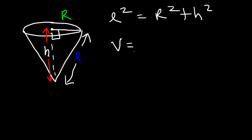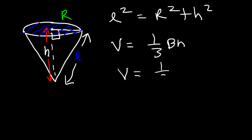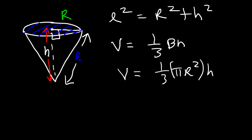To find the volume of a cone, use the equation: one-third base times height, where b represents the area of the base — which is the area of the circle, π r². So the volume equation of a cone is one-third π r² times height.